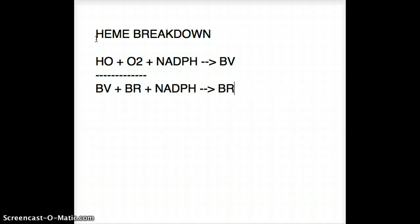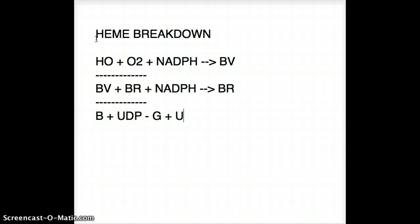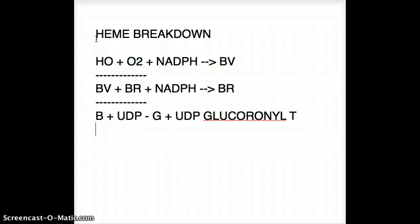Our biliverdin is going to be converted by biliverdin reductase and NADPH to give us bilirubin. Then bilirubin combines with UDP-glucuronate using the enzyme UDP-glucuronosyltransferase.